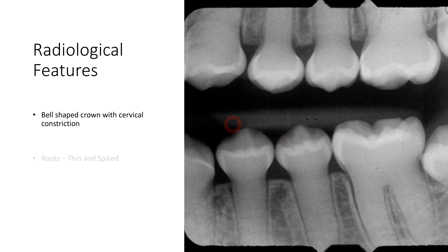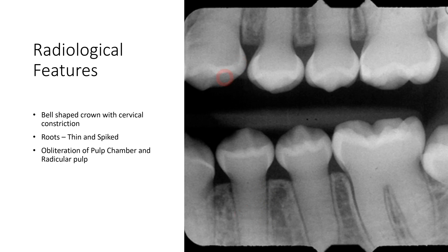The roots appear thinner and spike-shaped compared to normal teeth. In these radiological pictures, it is difficult to tell where the pulp chamber is — sometimes it is present, sometimes it is not. The radiolucency of the root canal is also not clearly visible, so both pulp chamber and root canal can be obliterated.